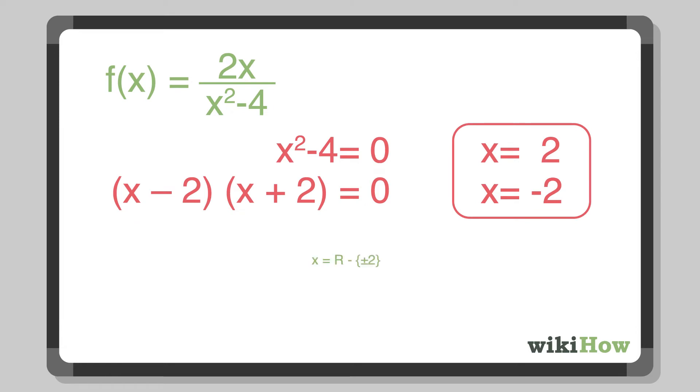This means you must exclude 2 and negative 2 from the domain. Define the domain as x equals all real numbers except for 2 and negative 2. You could also write it as d equals negative infinity to negative 2 union negative 2 to infinity.